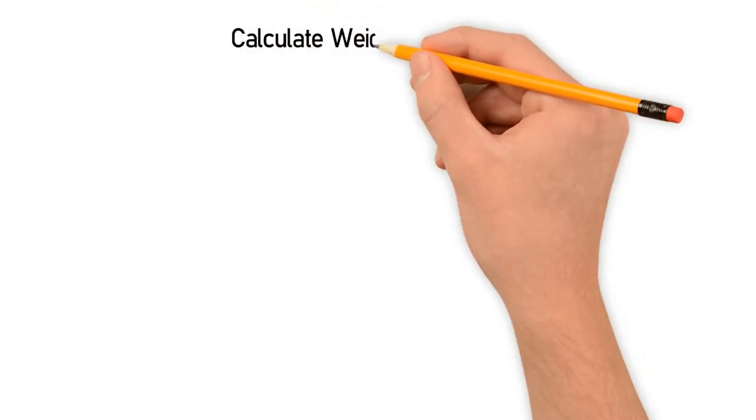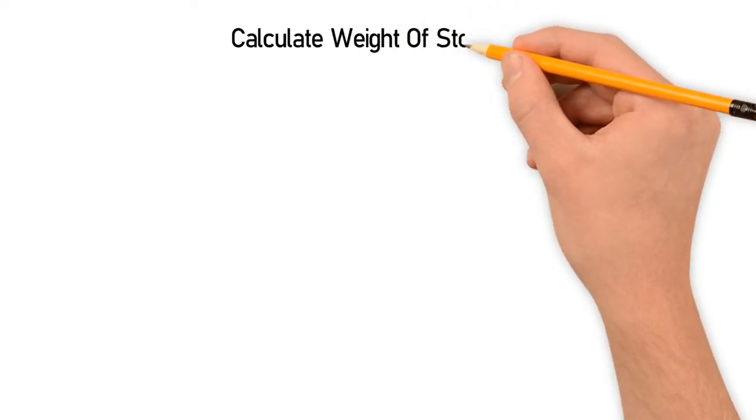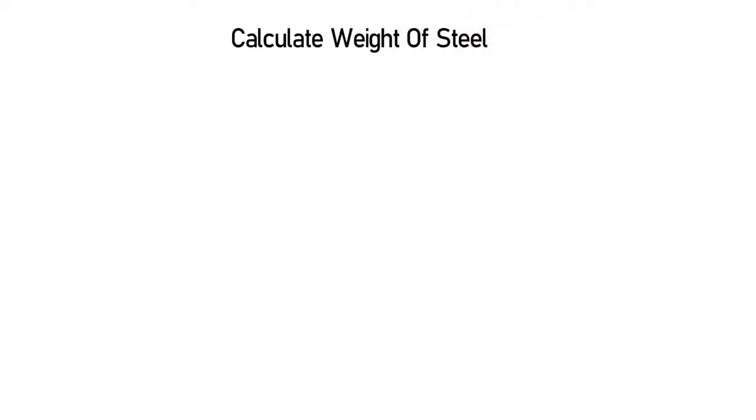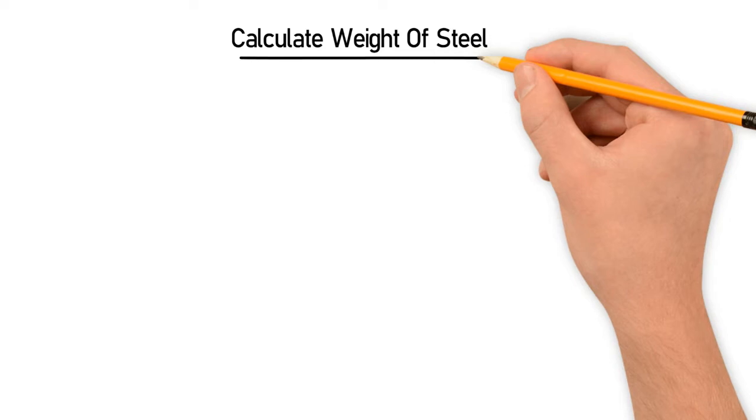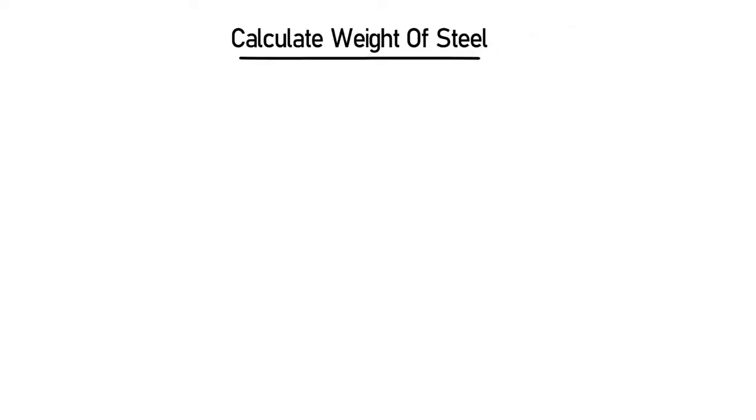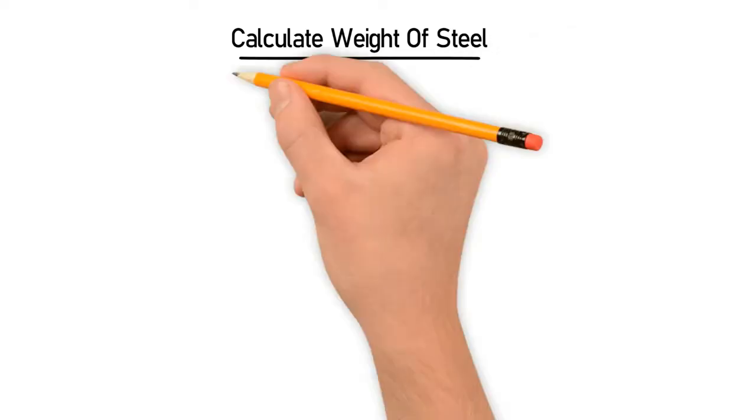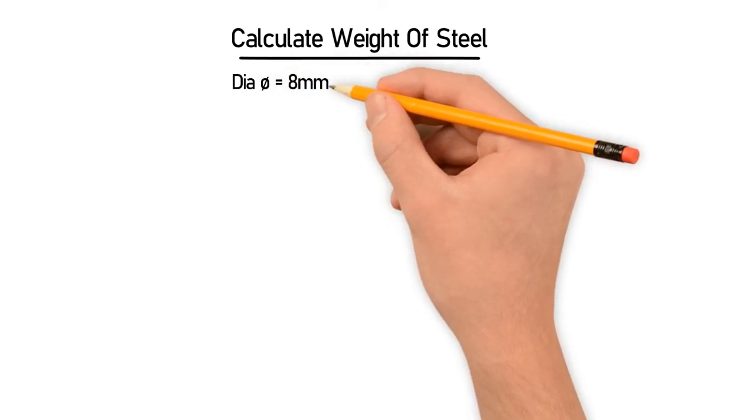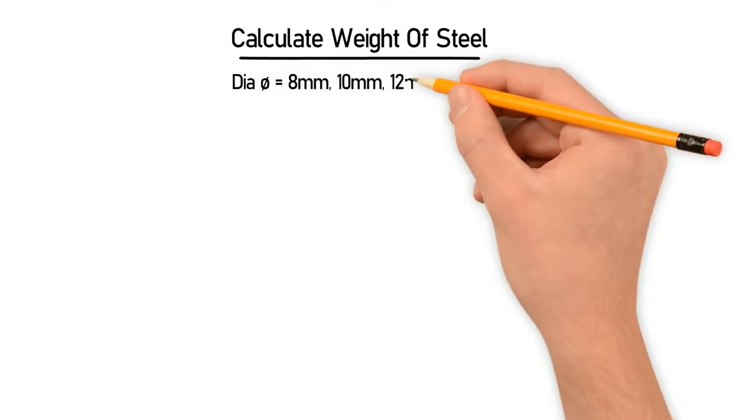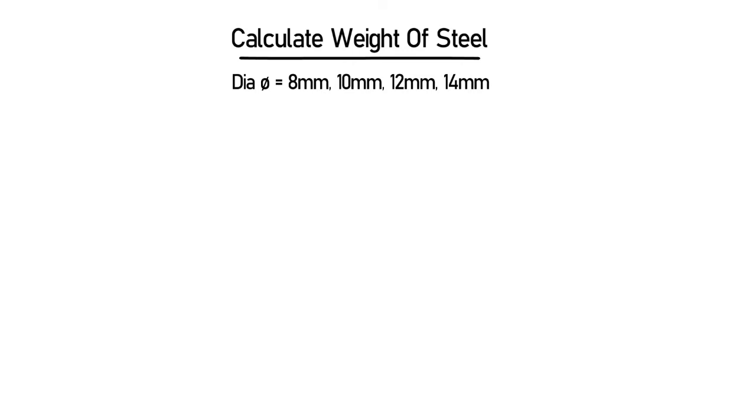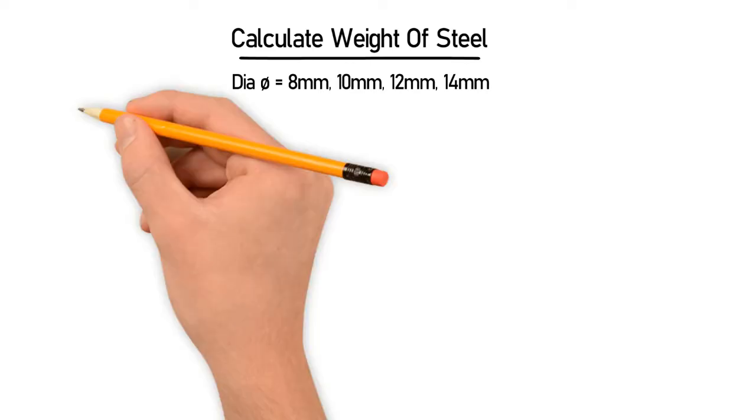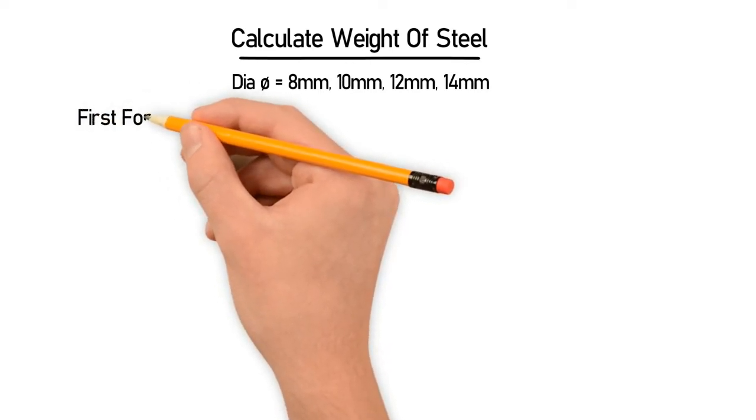Let's start with how to calculate weight of steel. First, we have to know the diameter of the steel. There are various diameters of steel available in the market, for example 8mm, 10mm, 12mm, 14mm. I will explain how to calculate the weight using two formulas.